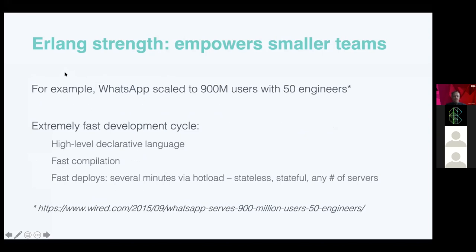The second thing that works so well with Erlang is an extremely efficient developer cycle for smaller teams. During the early years of WhatsApp, this allowed us to scale the service to almost a billion users with only 25 server engineers. Our change-test-deploy cycle was amazingly short — the closest analogy is doing web development and hitting page refresh. But unlike PHP or Python, we were able to do this for stateful services, databases, and thousand-machine clusters. This probably applies to Elixir as well.